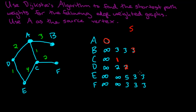We look at these two remaining labels — they're the same — and choose E. E's neighbors are C and D, both already completed, so F is unaffected. Finally we select F. We can now read off the solutions: the minimum weight of a path from A to any other vertex is as follows — to A: 0, to B: 3, to C: 1, to D: 2, and to both E and F: 3. This table keeps track of the algorithm in a nice, convenient way.